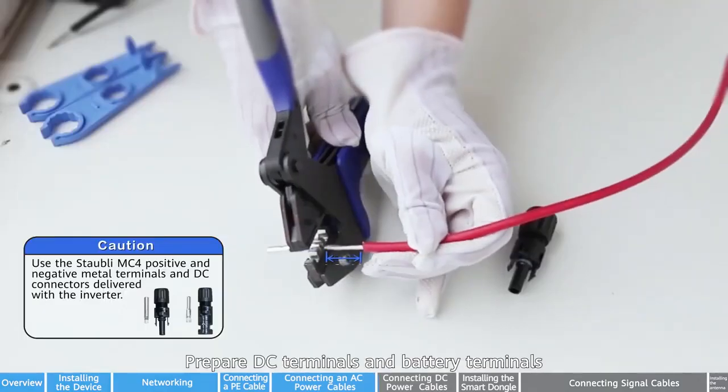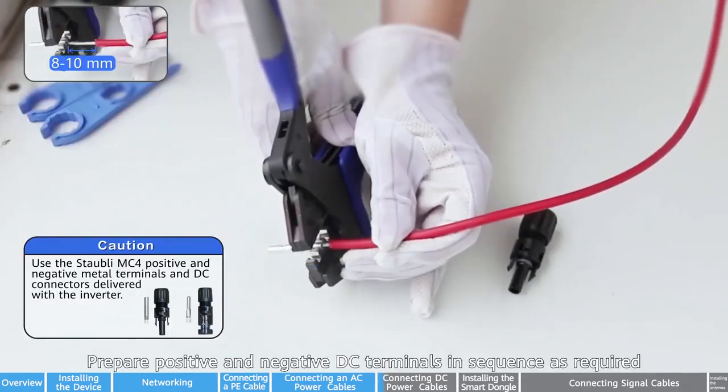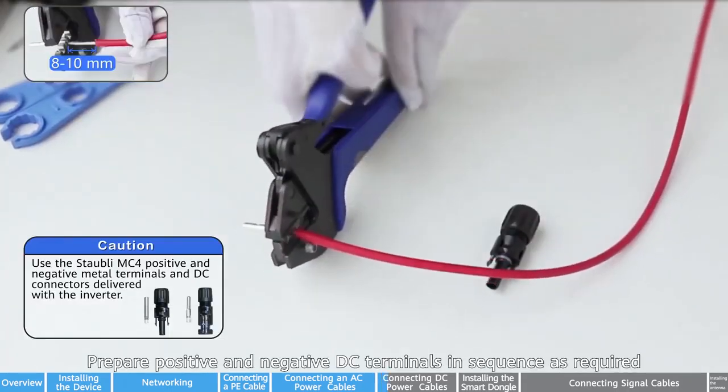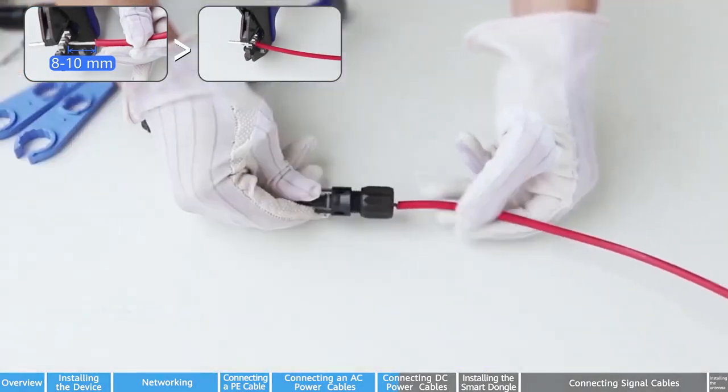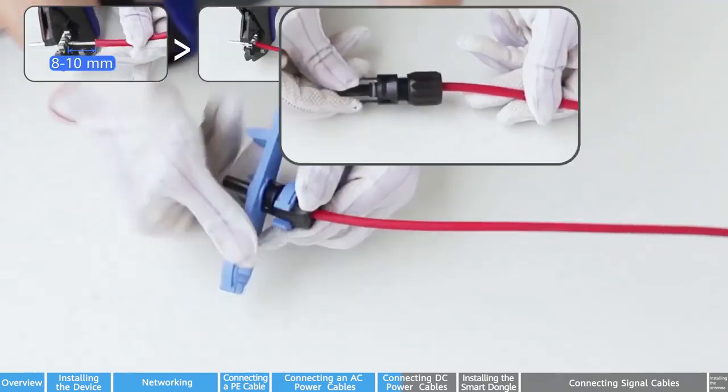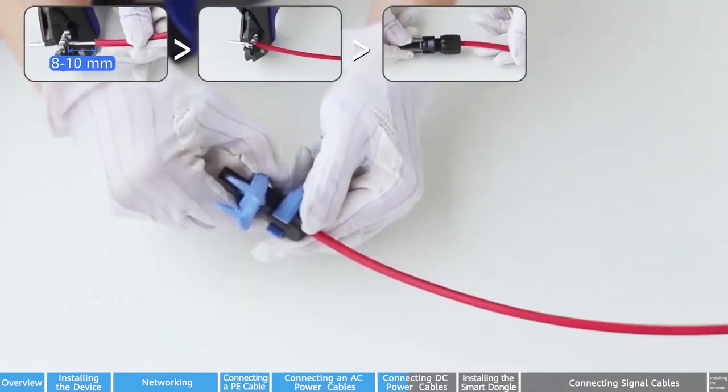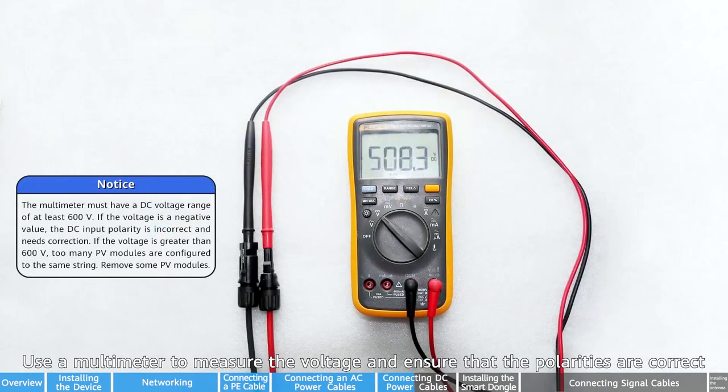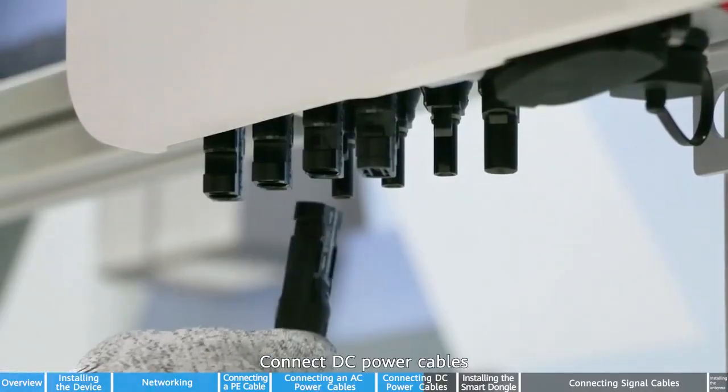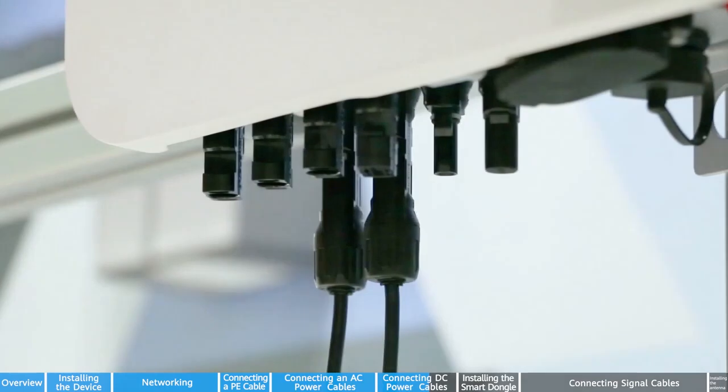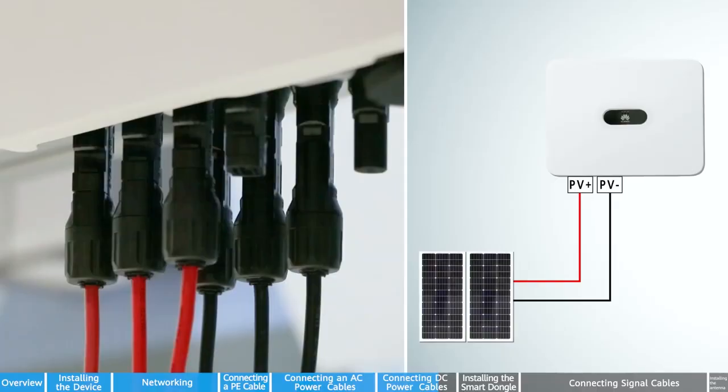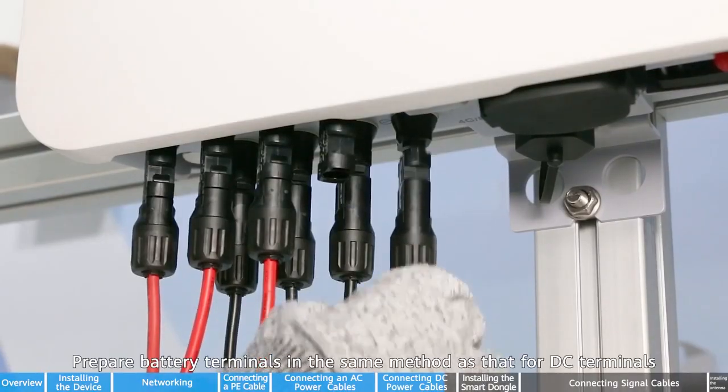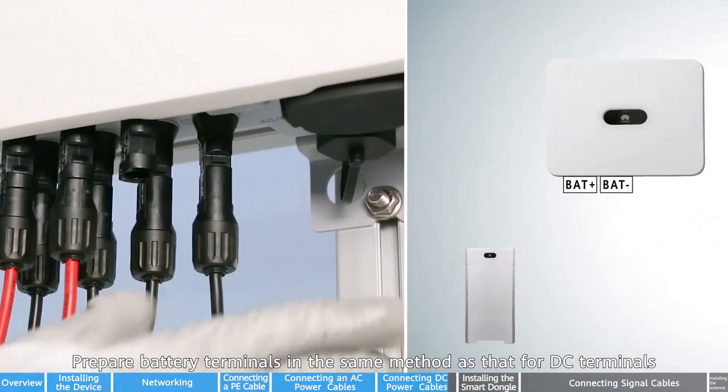Prepare DC terminals and battery terminals. Prepare positive and negative DC terminals in sequence as required. Use a multimeter to measure the voltage and ensure that the polarities are correct. Connect DC power cables. Connect battery cables. Prepare battery terminals in the same method as that for DC terminals.